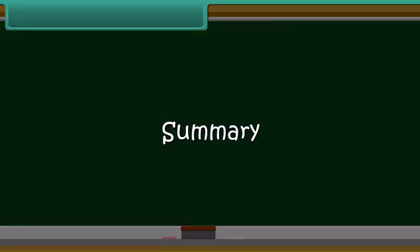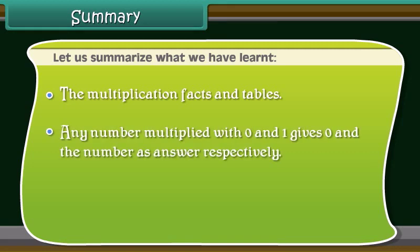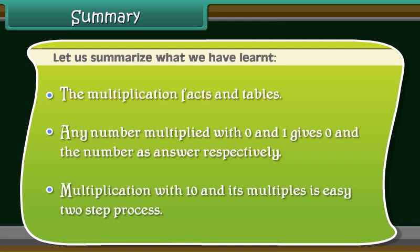Summary: Let us summarize what we have learned. The multiplication facts and tables: any number multiplied by 0 gives 0, and any number multiplied by 1 gives the number itself. Multiplication with 10 and its multiples is an easy two-step process.